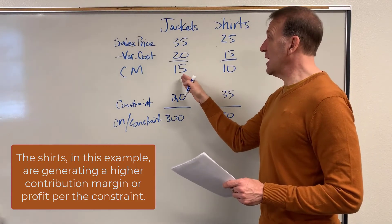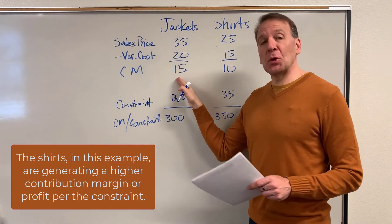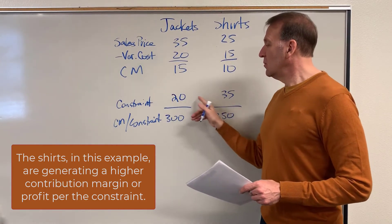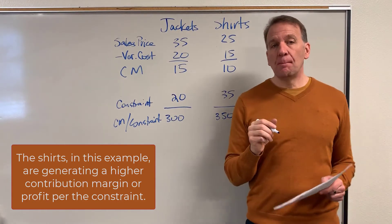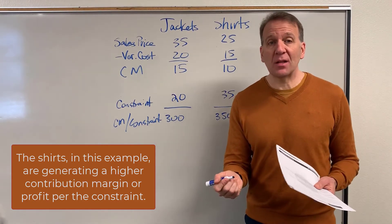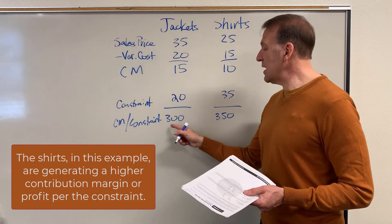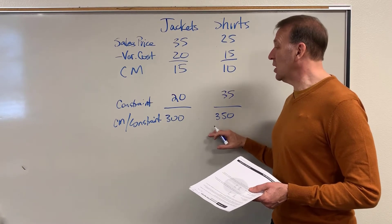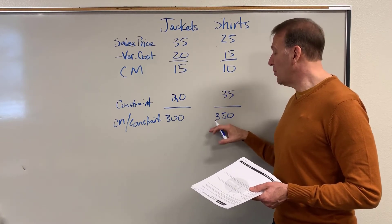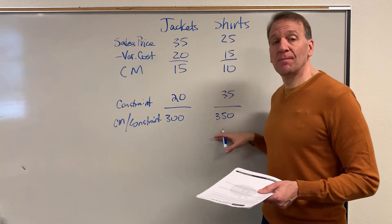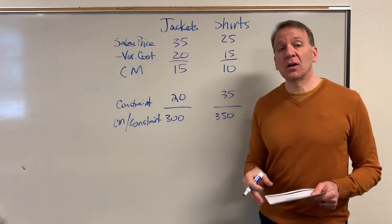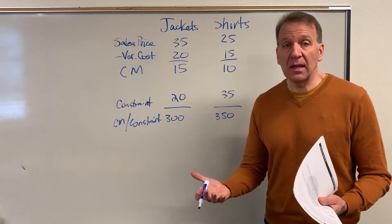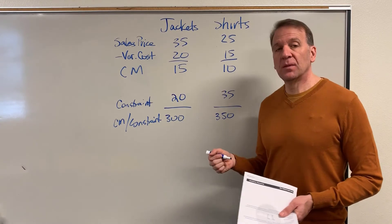Previously we said we want to produce jackets, but when we look at the constraint — which is machine hours — we look at how many of each we can produce per machine hour, whatever that constraint might be. And then we get these numbers that help us determine what we would do. So if we can sell unlimited shirts, then we would produce shirts and not jackets, because the shirts are actually generating a higher contribution margin per the constraint. Since we can only manufacture so many, shirts are actually more profitable.